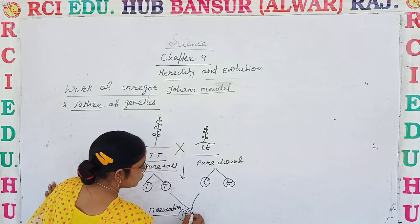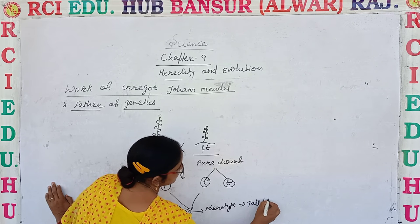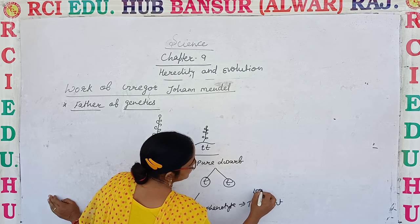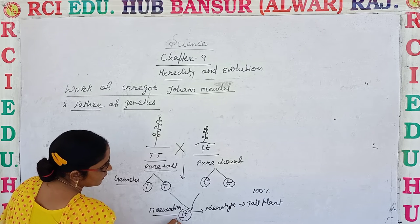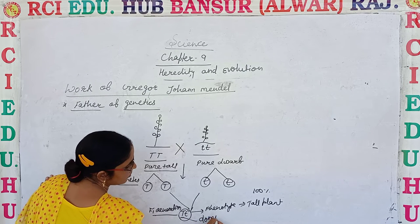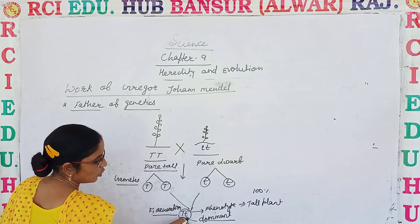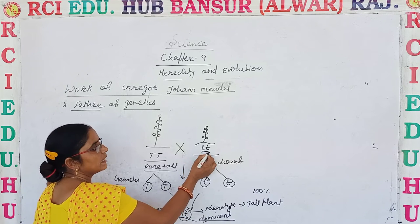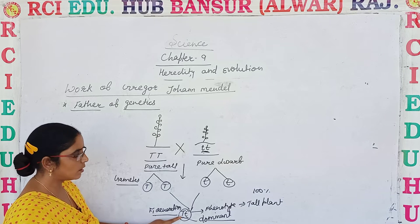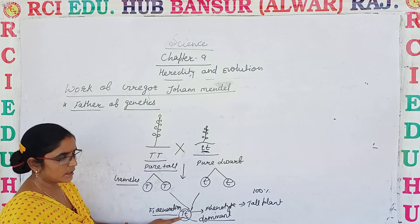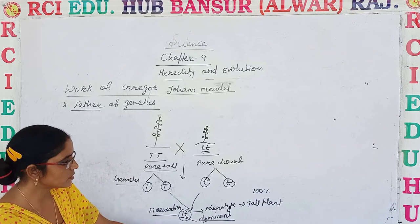Morphologically, the phenotype of the F1 generation was a tall plant — 100% tall. From this we can conclude that capital T is the dominant trait, because the dominant trait is what is expressed in both heterozygous and homozygous conditions. Small t is not expressed because small t is the allele for dwarf, or short height, while capital T is for tall height. So capital T is the dominant trait and small t is the recessive trait — it is not expressed.